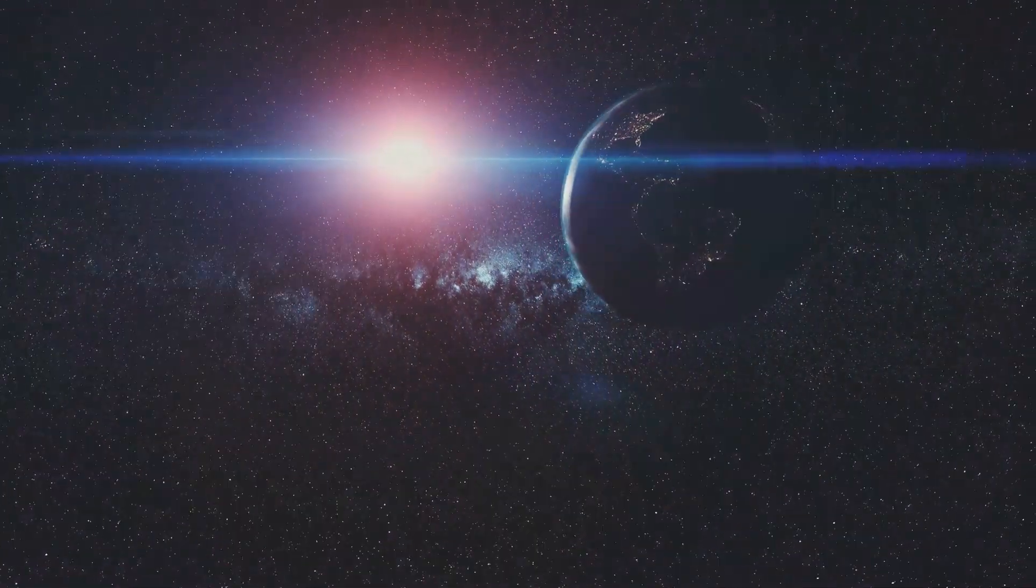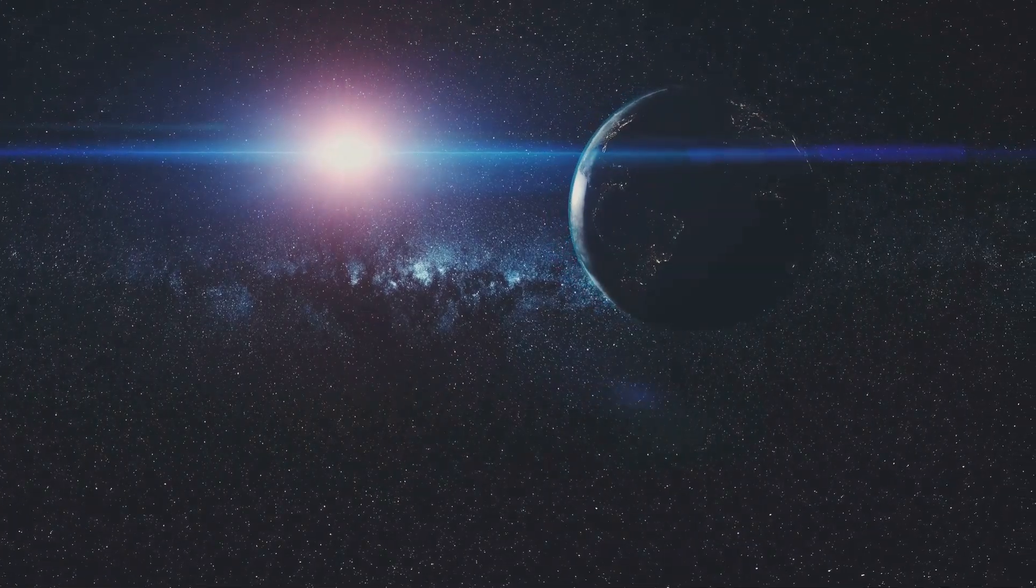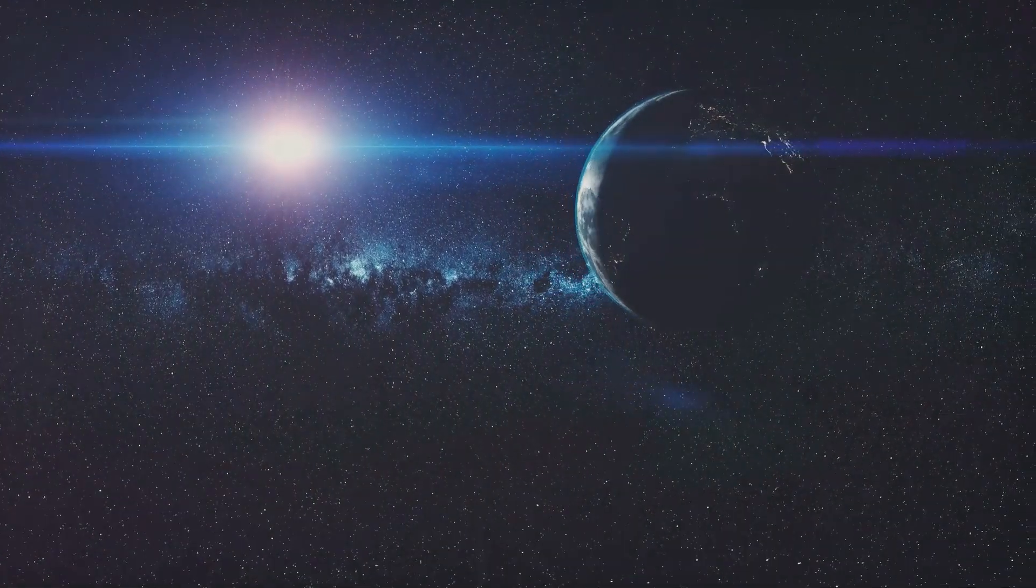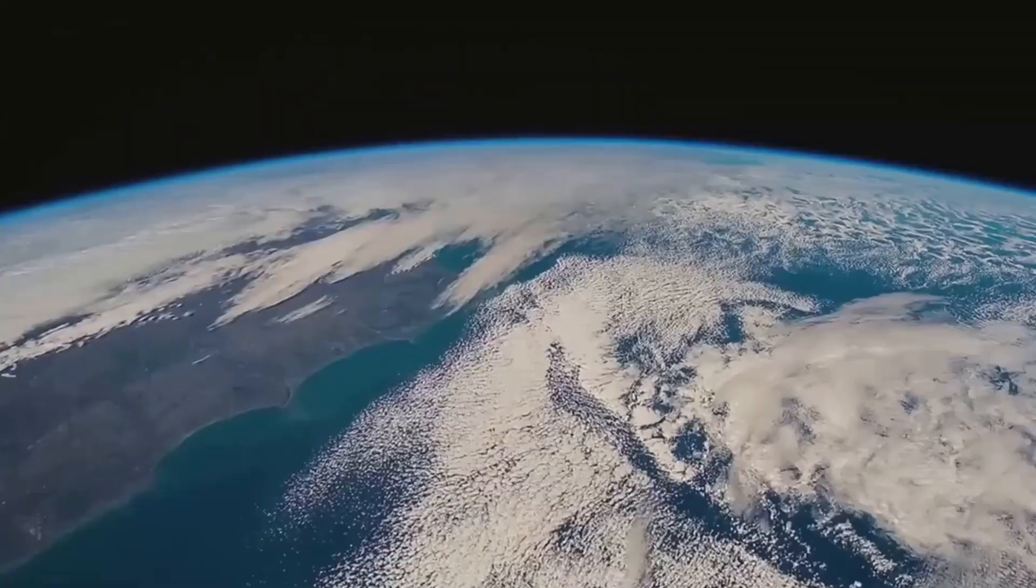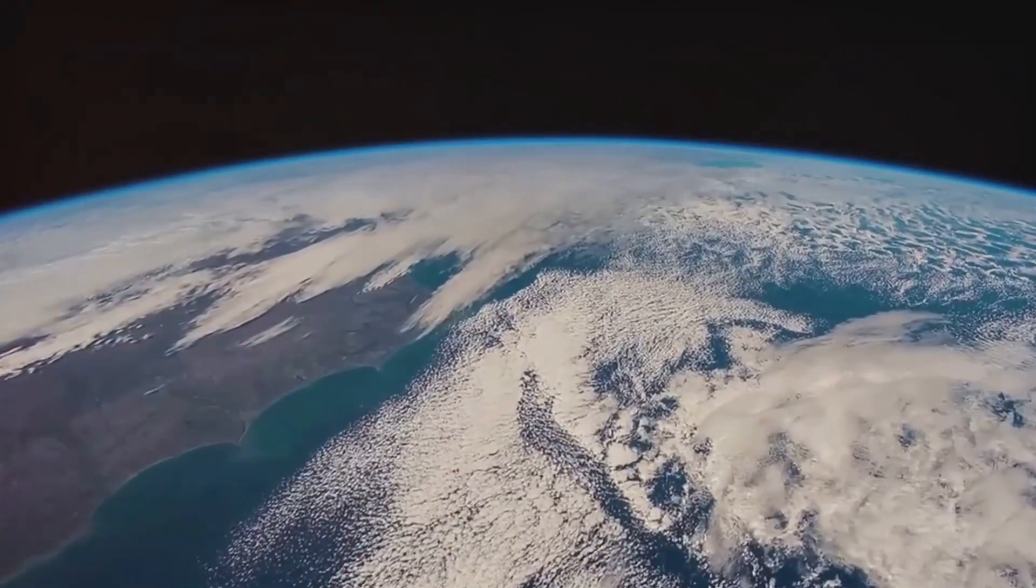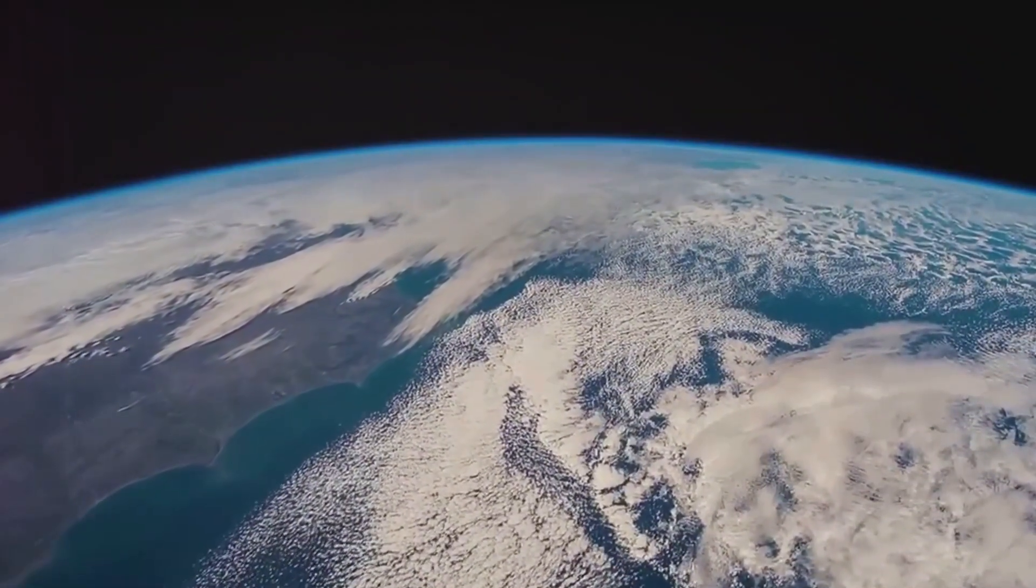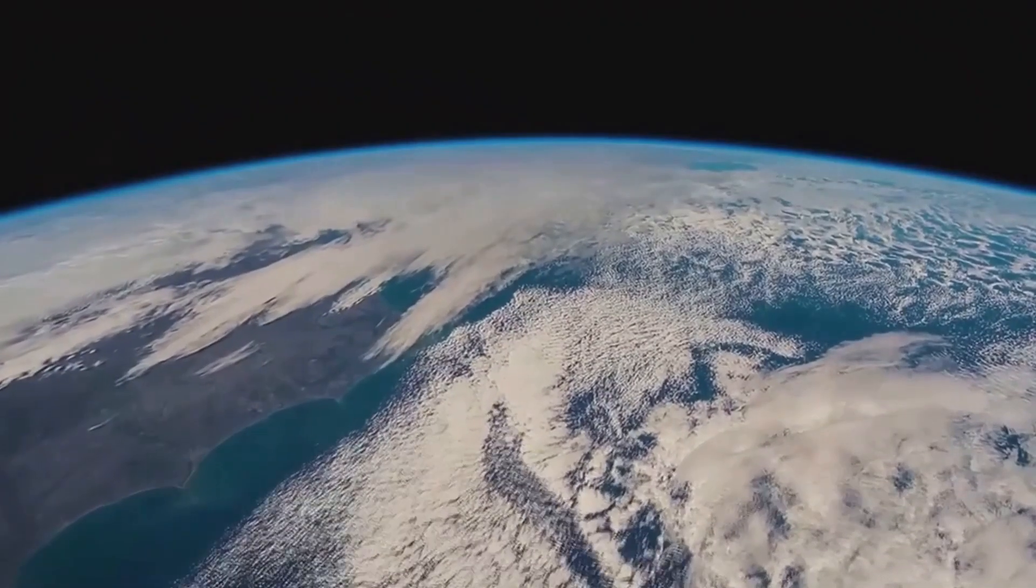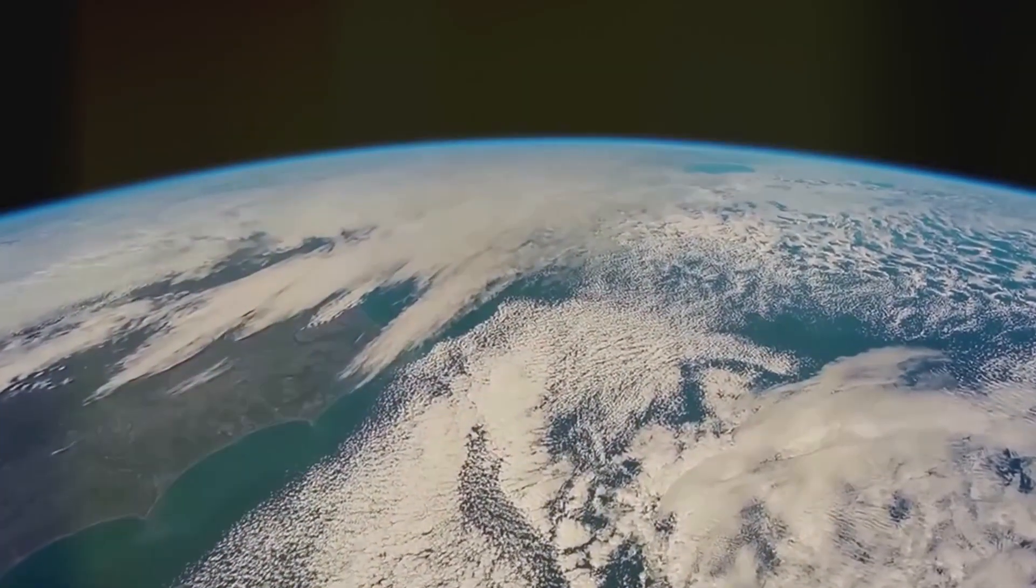The closest point to the Sun, known as perihelion, occurs around January 3rd, while the farthest point, called aphelion, occurs around July 4th. This elliptical orbit is the reason we have seasons, as the Earth travels along its orbital path. Different parts of the planet receive varying amounts of sunlight, resulting in the changing seasons.